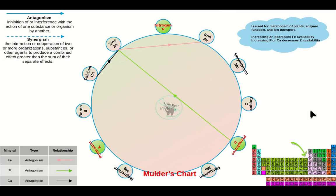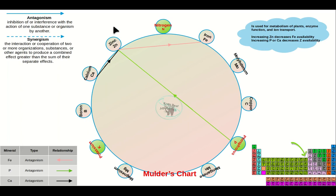Last but not least, zinc, number 30 on the periodic table, is used for the metabolism of plants, enzyme function, and ion transport. Increasing zinc decreases the availability of iron, and increasing phosphorus or calcium lowers the availability of zinc.